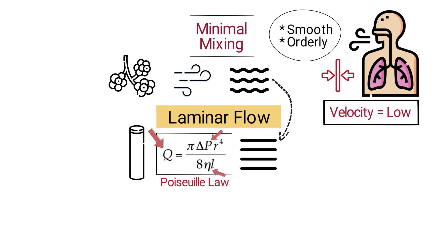Laminar flow is predominant in the small bronchioles and alveolar ducts of the lungs. Here, the airway diameter is small and the flow rate is relatively low, allowing for a more uniform and efficient gas exchange.